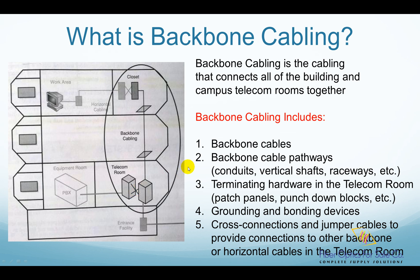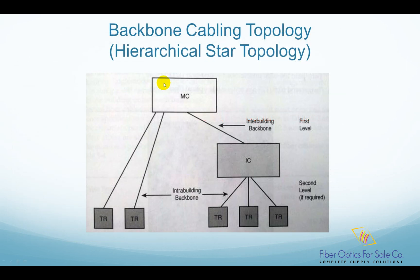The backbone cabling ties all of the different subsystems together to create an integrated configuration. The TIA/EIA 568C requires that backbone cables be installed in a hierarchical star topology, as seen in this picture. Each horizontal cross connect in a telecom room is connected either directly to a main cross connect, or to an intermediate cross connect and then to the main cross connect.